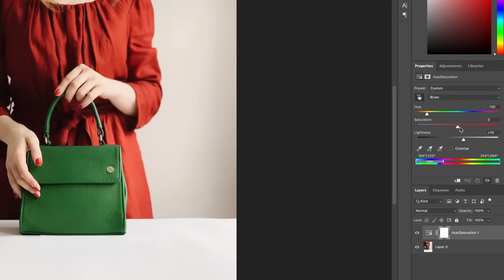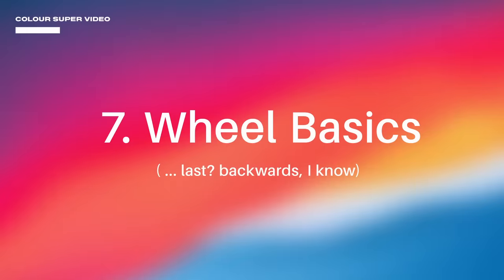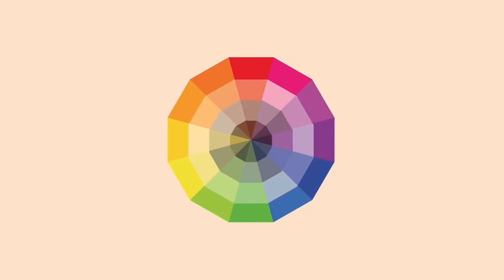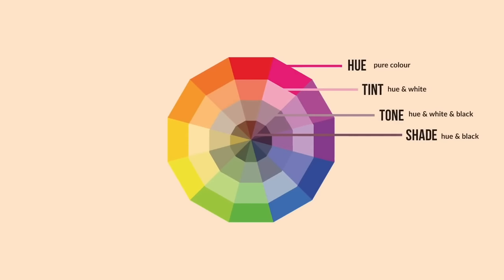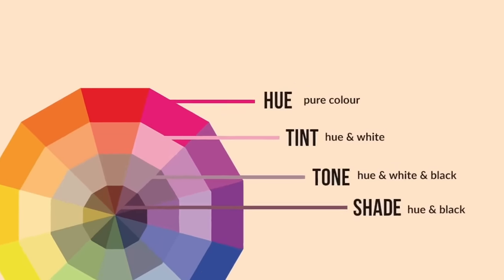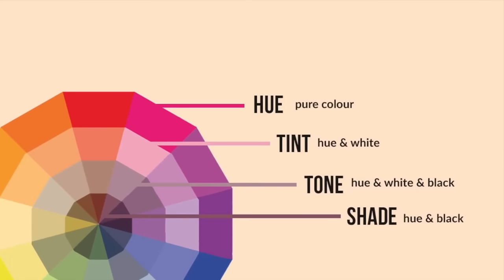This color wheel is useful because it shows hues, tints, tones, and also shades. The hue is the pure color around the edge of the wheel. The tint is taking the hue and adding white to it. A tone is the hue plus white and black. And finally, the shade is the hue plus black.